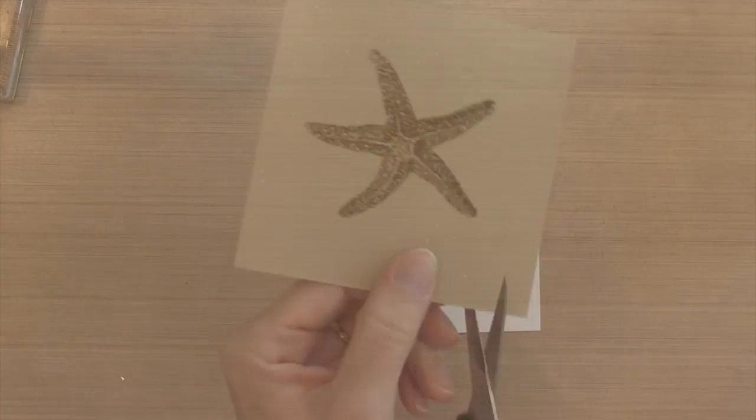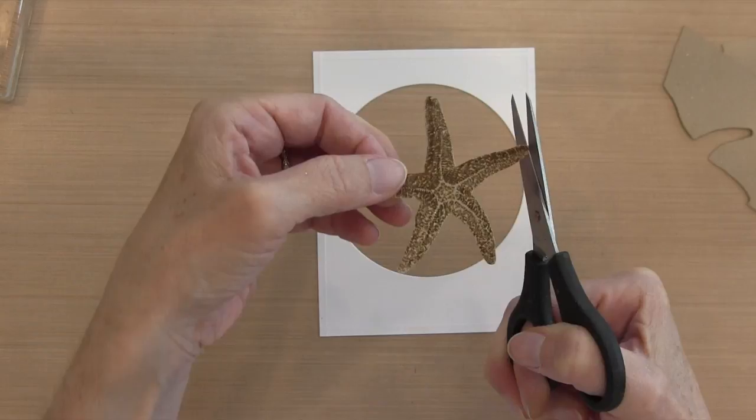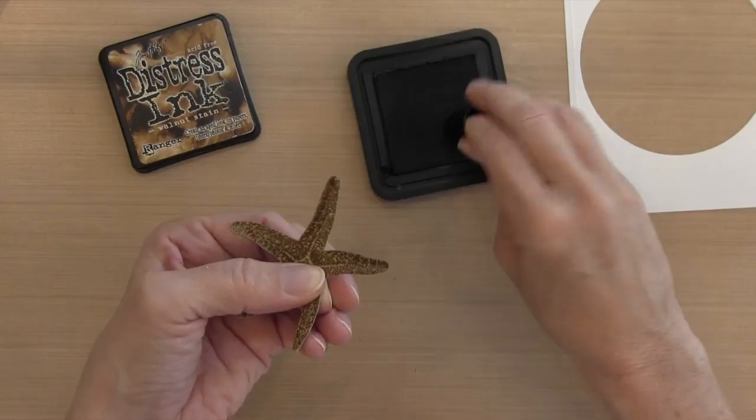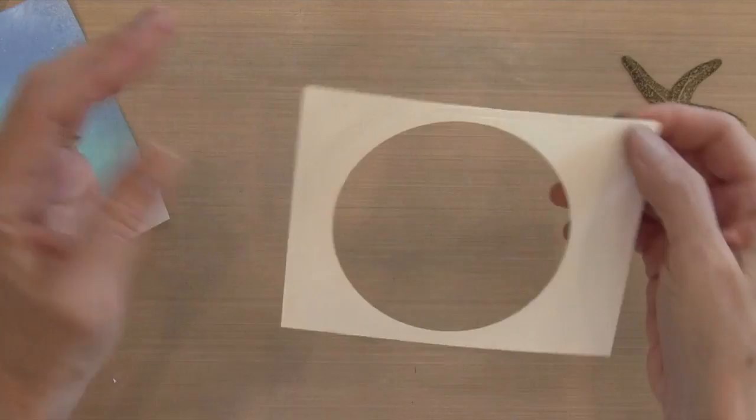Then I'm going to cut my starfish out with a scissor and I'm going to have those Crumb Cake edges because that's the color of my cardstock. I just took a sponge dauber and my Walnut Stain ink and I'm not really coloring the front of the starfish—I'm really more focused on coloring the sides where you could see that Crumb Cake cardstock.